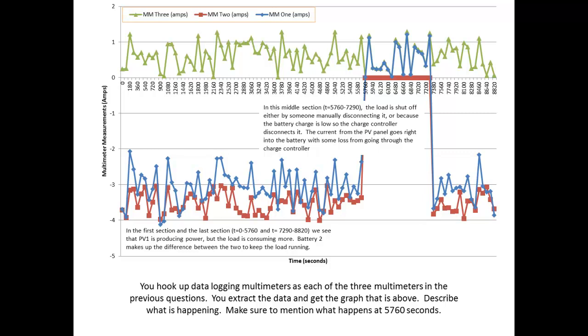In the first section and the last section, which runs from T equals 0 to 5,760, and T equals 7,290 to 8,820, we see that PV1 is producing power, but the load is consuming more. Battery 2 makes up the difference between the load and PV1 to keep the load running.